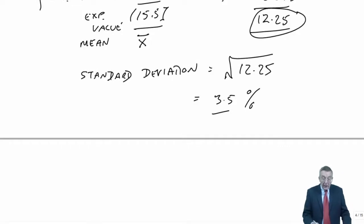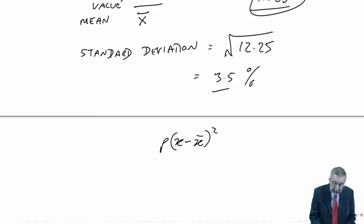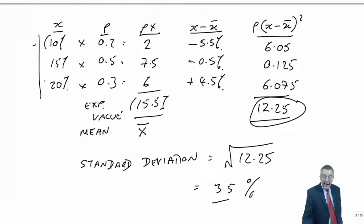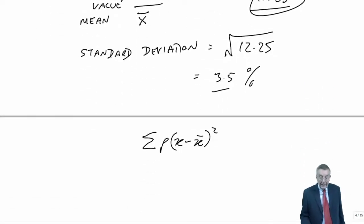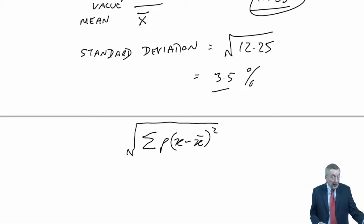And alright, as a formula, what did we do? We took x minus x bar, we squared, multiplied by the probability, and added them all up, which is what sigma means. So the sum of p, x minus x bar squared, that's the 12.25, but then to get back to the same units, we took the square root. So there you are, that's that formula, that's above the example.